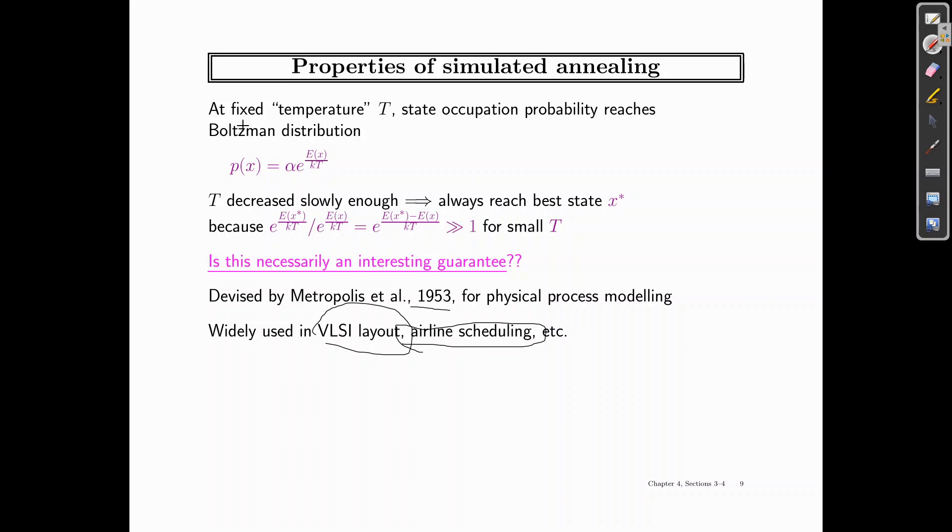So we've got a thing called temperature. So if you have a fixed temperature T, then the state occupation probability reaches something called the Boltzmann distribution, represented over here, the probability. So T decreased slowly enough, it will always reach the best state, which we call X star.